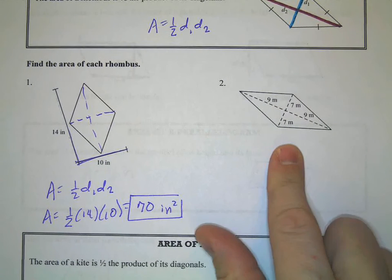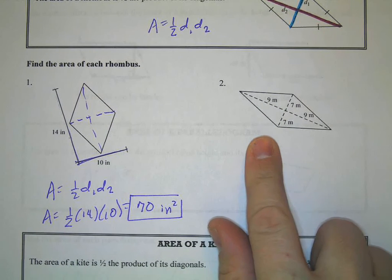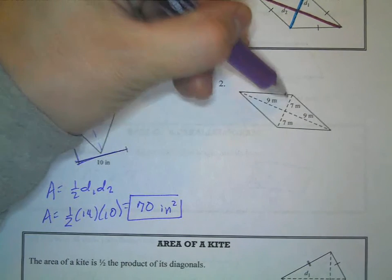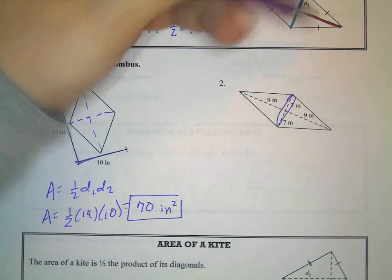And here, remember the diagonals of a rhombus bisect each other, which means they divide each other in half. So this whole distance here is 7 plus 7, which is 14. And this whole distance is 9 plus 9, which is 18.